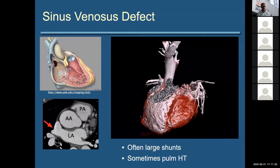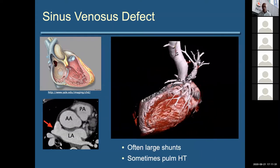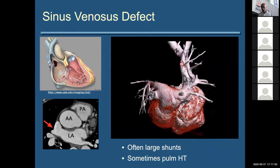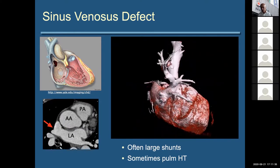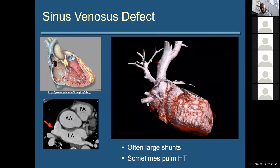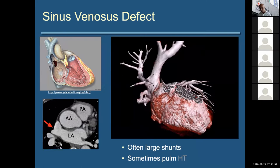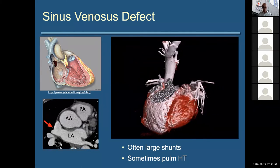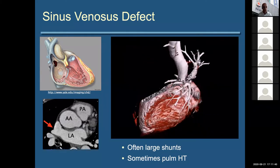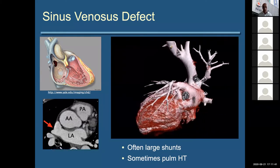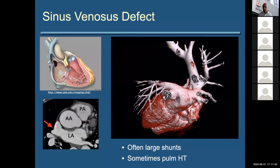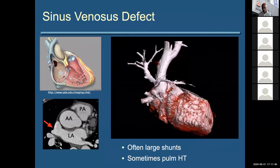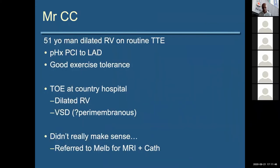This 3D picture shows the anomalous vein coming in and draining there, with an intra-atrial communication associated with it. These are often very large shunts and sometimes have pulmonary hypertension associated with them.